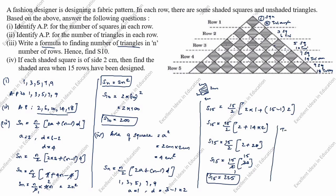Total area of shaded squares = area × S15 = 4 × 225 = 900 cm². So the total area of shaded squares is 900 cm². Thanks for watching this video.